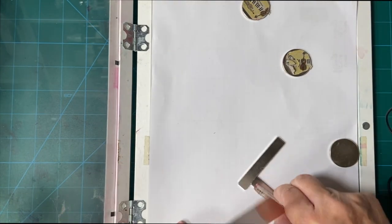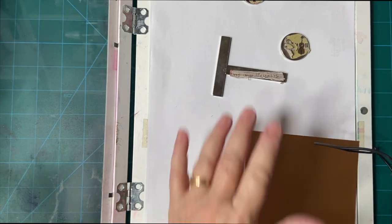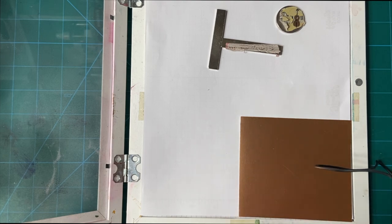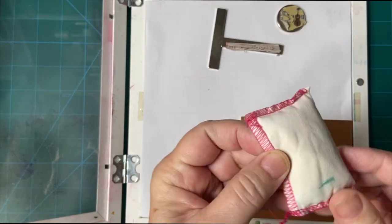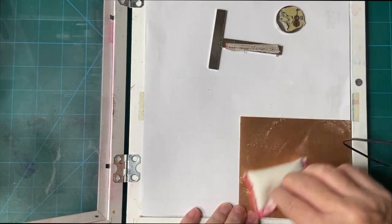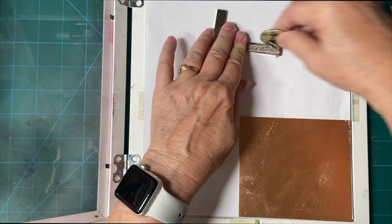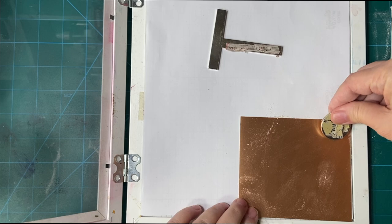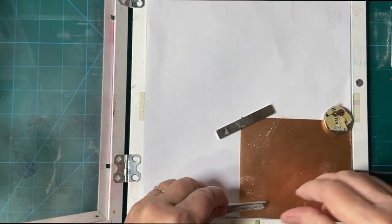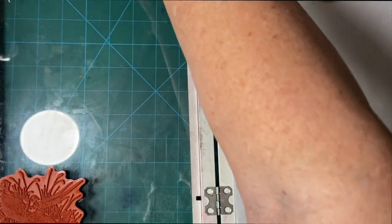I'm going to be putting this in the corner. I'm going to be rubbing it. This is called an embossing buddy and it just keeps the static down so the powder will go where I want it to. You do this before you stamp and then I'm going to lay down my magnets and then I'm going to go ahead and stamp.